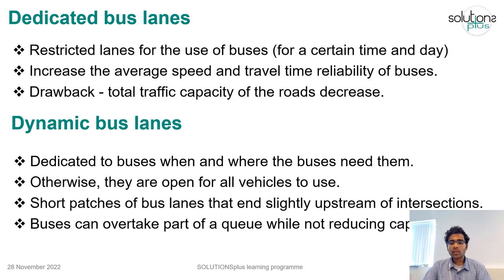Finally, we take a look at a traffic management measure specifically targeting buses. A dedicated bus lane is a measure to reduce delays for public transport and encourage its use. As the name suggests, it works by restricting lanes for the use of buses at certain times and days. This increases average speed and travel time reliability for buses due to no interaction with other road users. These lanes also have their own dedicated traffic signals providing priority. However, a major drawback is that total road traffic capacity decreases as one or more lanes are reserved for buses and may remain unused when there is insufficient bus traffic.